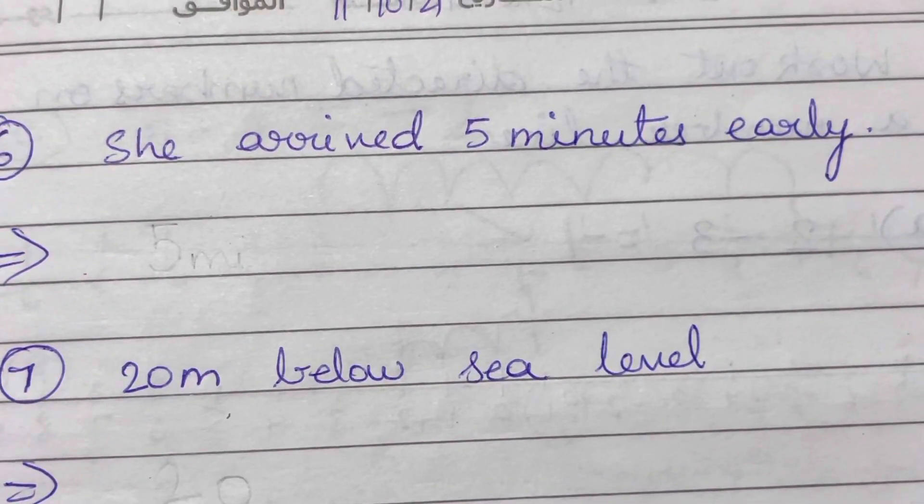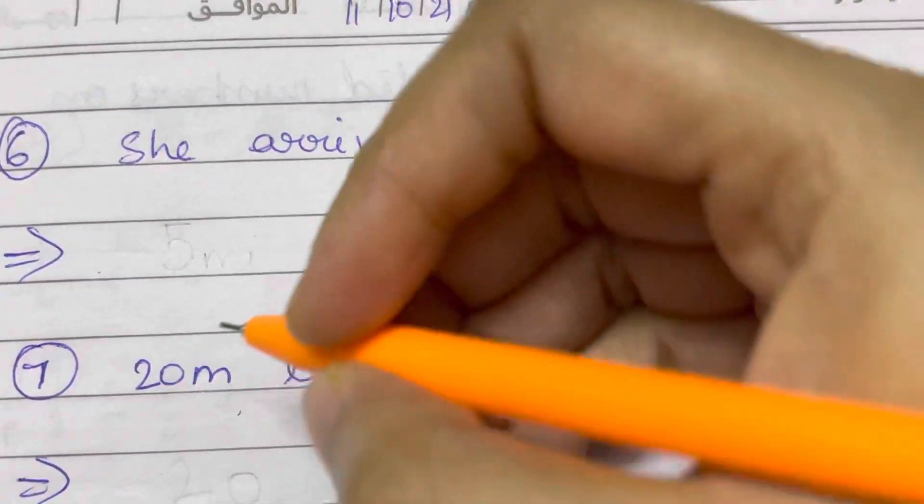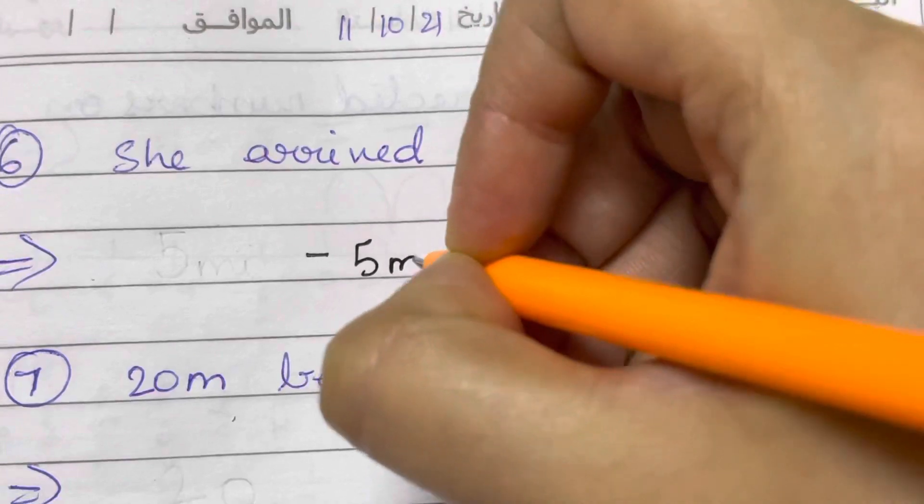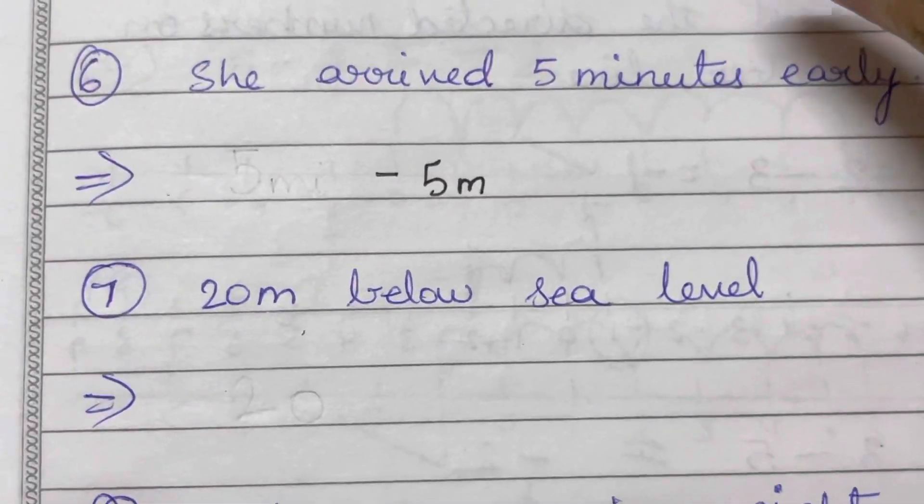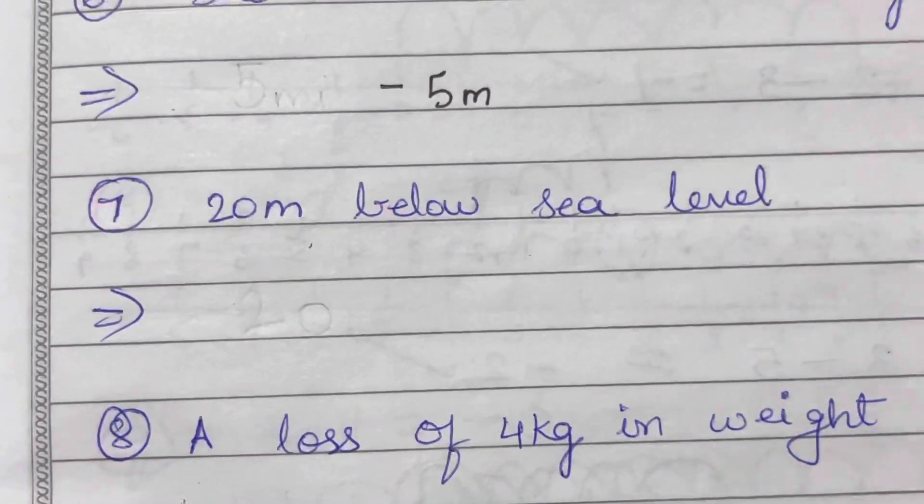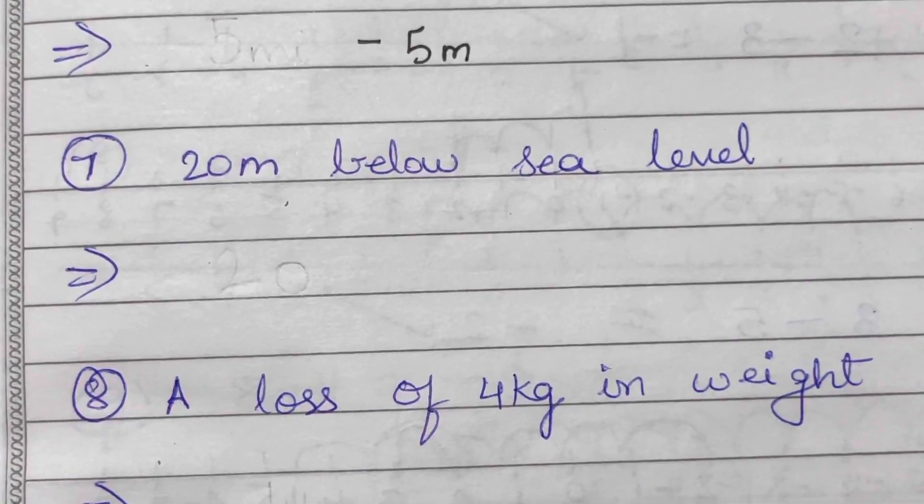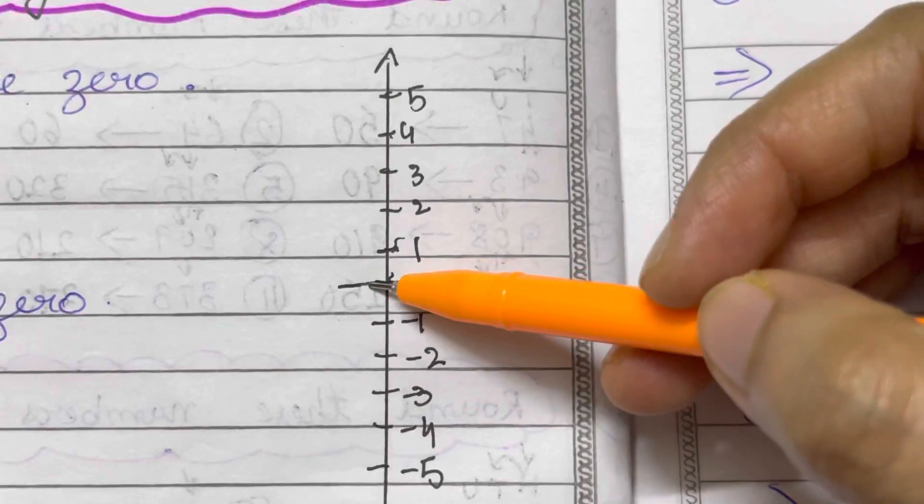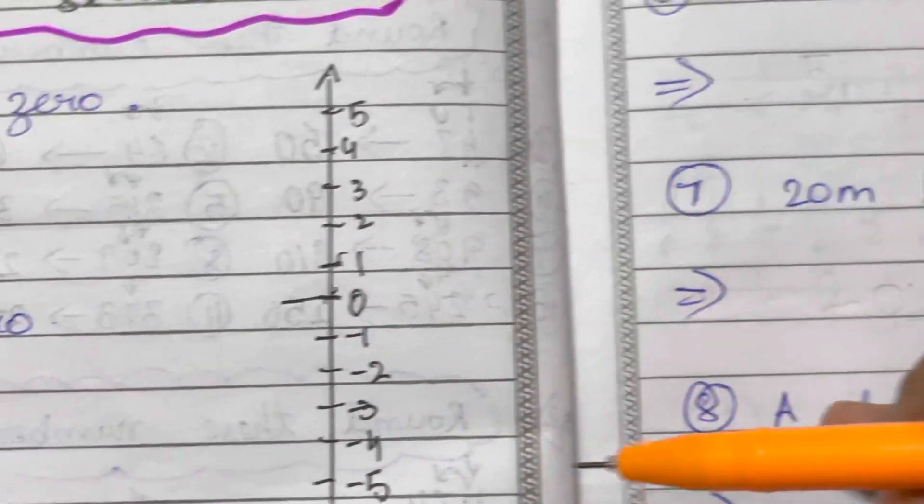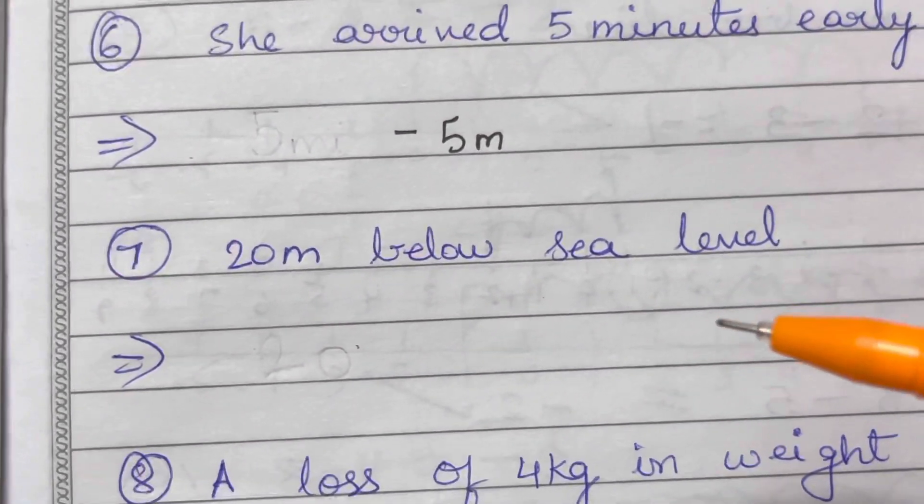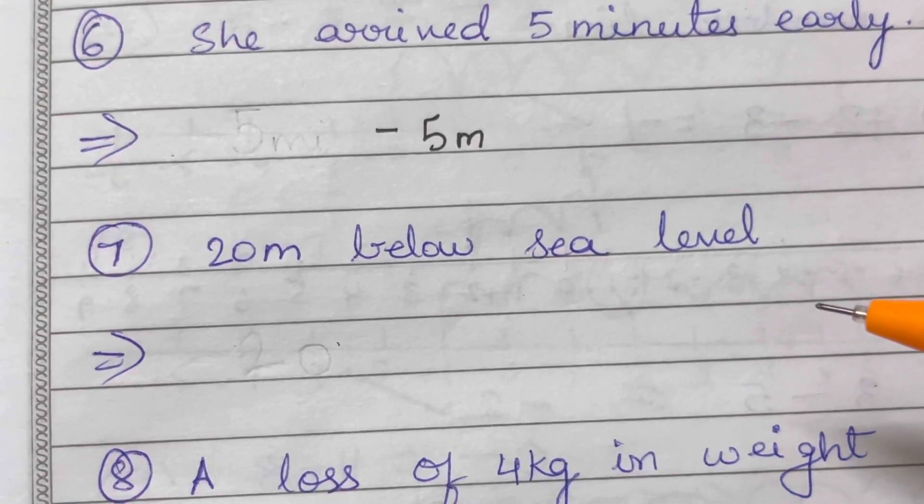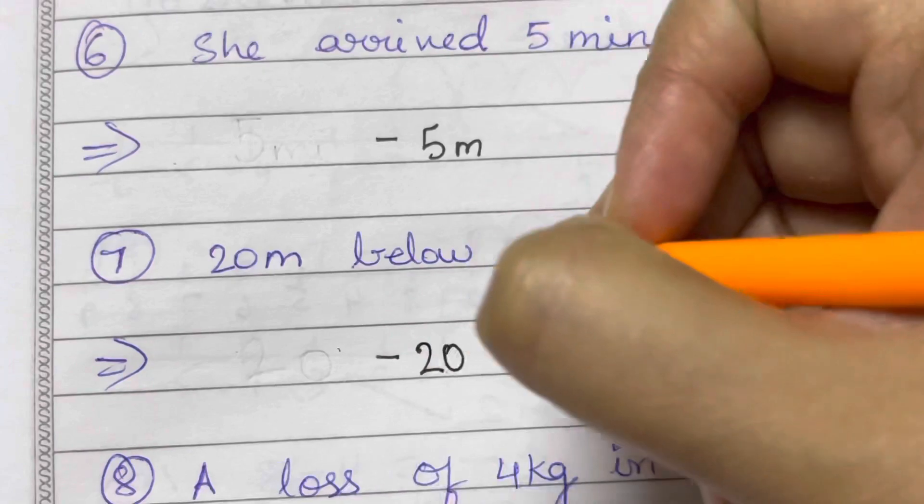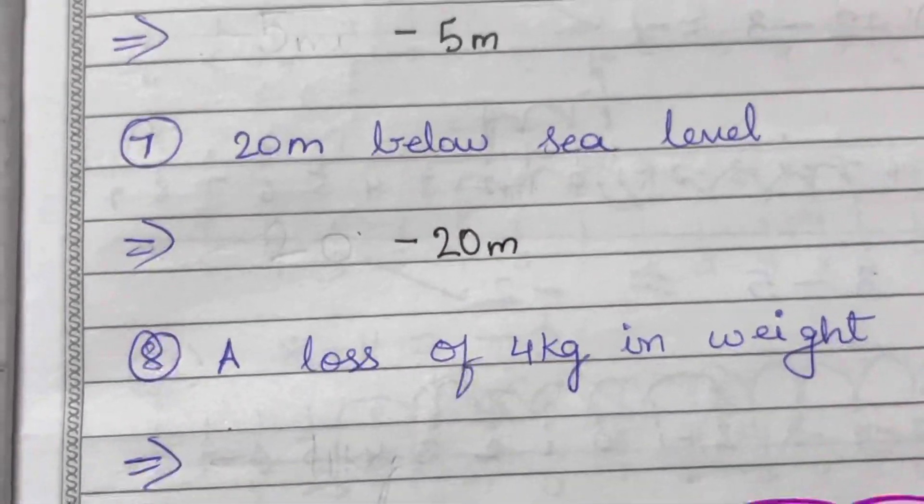And 20 meters below sea level. So below the sea level - sea level, this is the sea level, zero - and below the sea level, all is negative, indicated with, represented with a negative number. So below sea level, minus 20 meters.